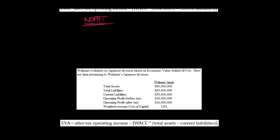If you remember, we've got our formula. We're going to need after-tax operating income. Where do we have that here? It's right here — that's $16 million, after tax. And then we're going to subtract.